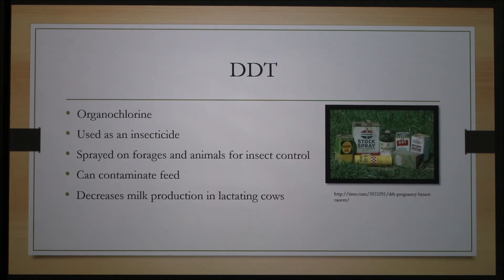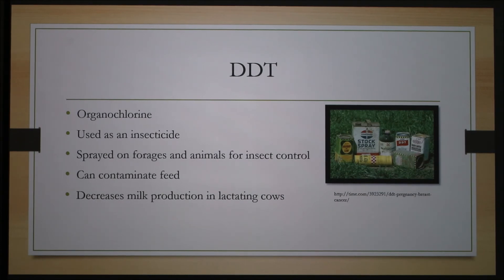The last environmental estrogen I will be going over is a commonly used insecticide called DDT. It is a member of the organochlorine family and has been sprayed on forages and animals to keep insects at bay since 1939. DDT is colorless, odorless, and tasteless, so toxicity can occur undetected very easily. DDT most often affects animals that are kept near or on crop fields and causes decreased milk production and even respiratory issues.